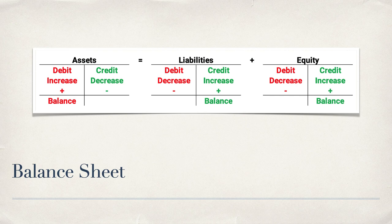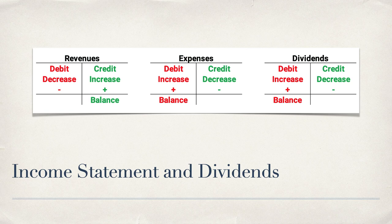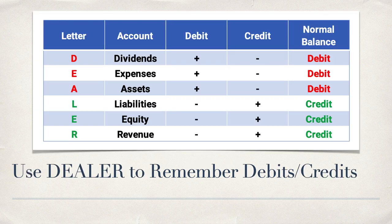Liabilities and equity take credits to increase and debits to decrease. Looking at the income statement: revenues increase with a credit and decrease with a debit; expenses increase with a debit and decrease with a credit. Dividends take debits to increase and credits to decrease. Dividends are a contra equity account, which reduces the equity account, so it's opposite the normal balance of equity — that's why it takes debits to increase.